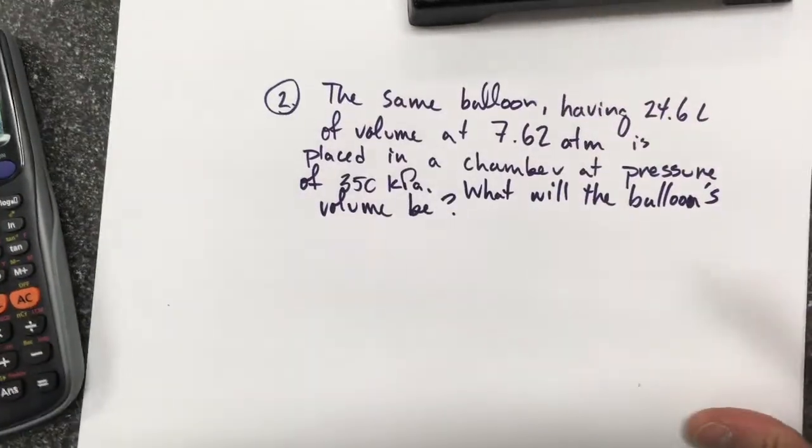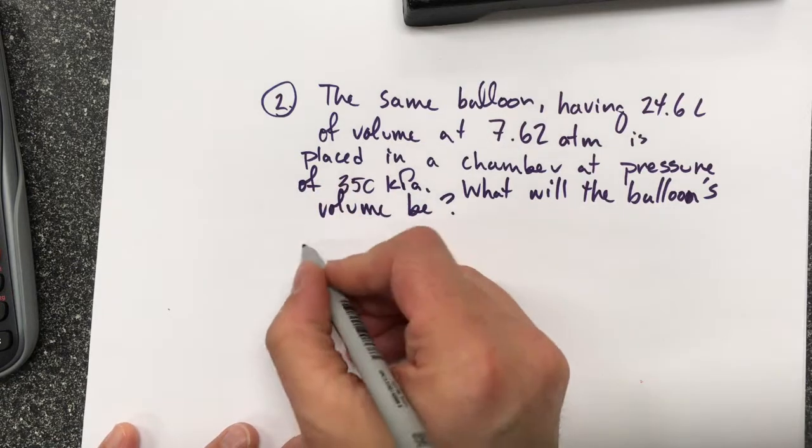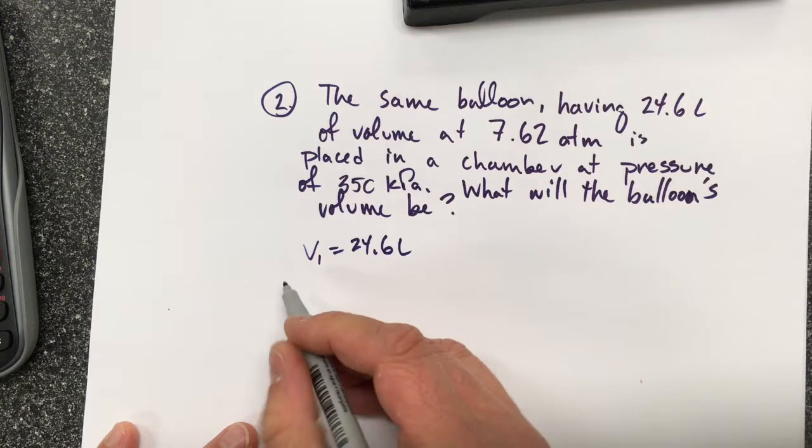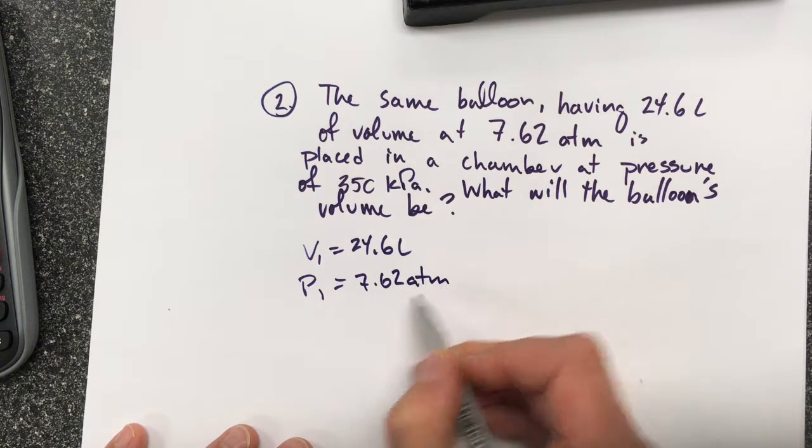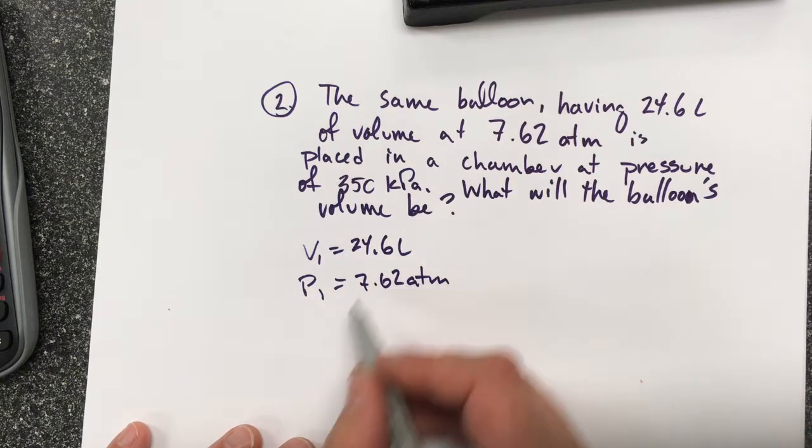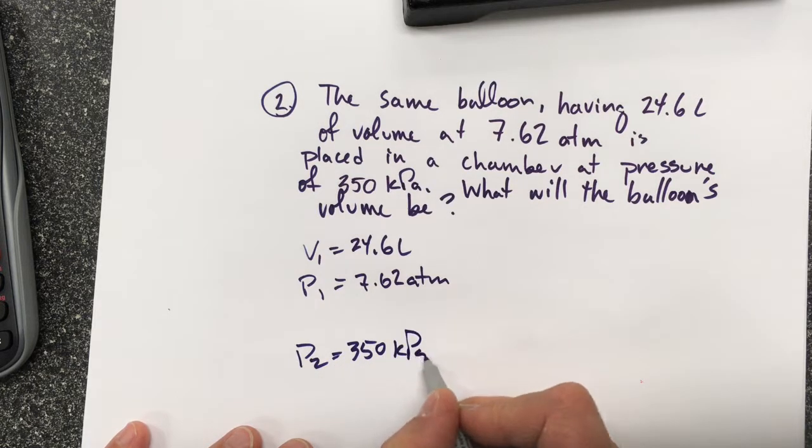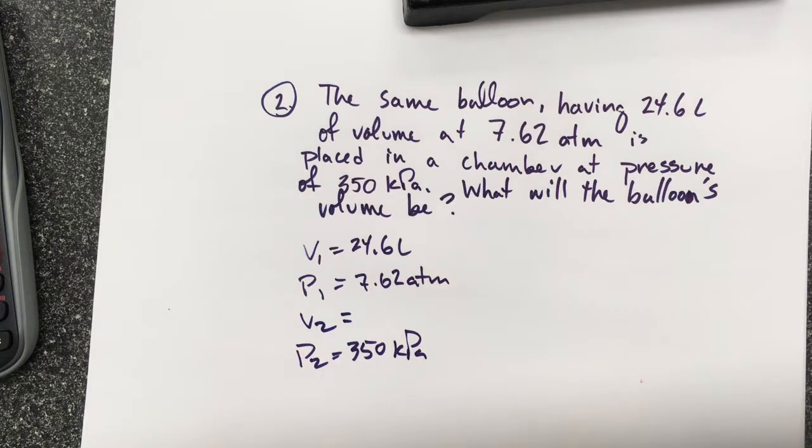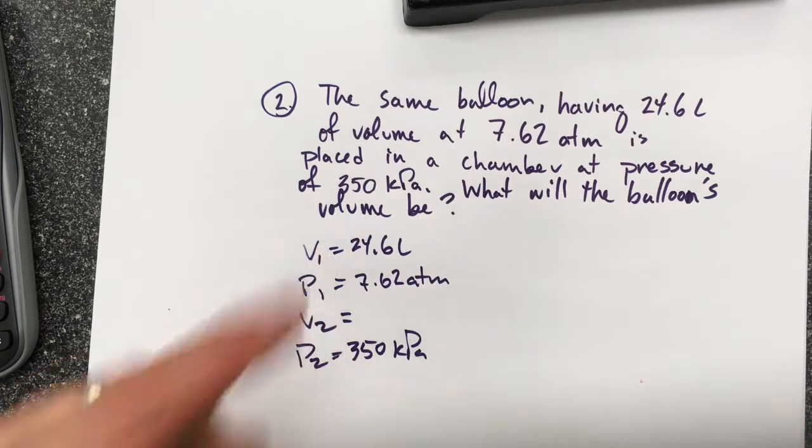The other Boyle's Law question I'll ask is, we have the same balloon. So it's starting at a volume of 24.6 liters, and its pressure is 7.62 atm, and it's placed in a chamber at a pressure of 350 kilopascals. So my P2 is 350 kilopascals. What is the volume of the balloon when it's in that chamber? So essentially, the volume of the balloon can change pretty easily, because balloons can be expanded or compressed, but it's at a new pressure.